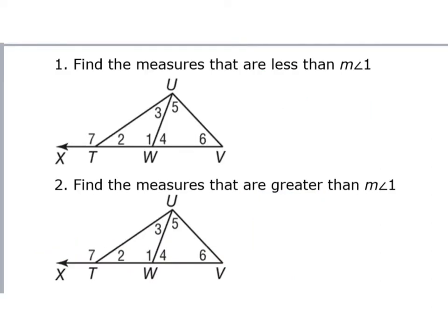Find the measures that are less than the measure of angle one. I know that remote interior angles are less than exterior angles. Angle one is an exterior angle, so my remote interior angles that will be less than angle one are going to be angle five and angle six. For the next one, it says find the measures that are greater than angle one. That means angle one needs to be a remote interior angle inside a triangle. I need to extend a side that's not touching it — extending to the left — and angle seven is going to be bigger than angle one as the exterior angle. So angle seven is greater than angle one.